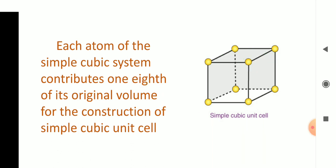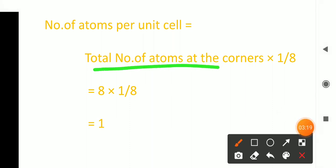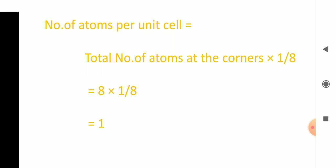Now let us calculate the total number of atoms per simple cubic unit cell. It is equal to the number of atoms at the corners: a cubic system has eight corners, so eight into one-eighth, which is equal to one. The number of atoms present per unit cell of a simple cubic system is one.